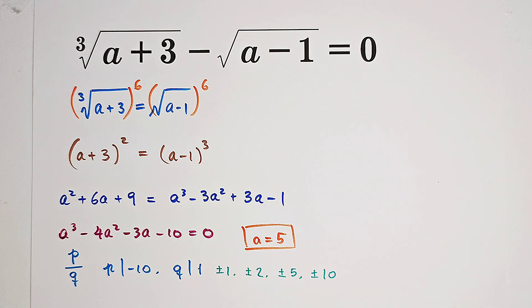So that means the left hand side has a factor, a minus 5. And now we want to factorize the left hand side completely. Of course, you can use long division, but we can also do it in this way.